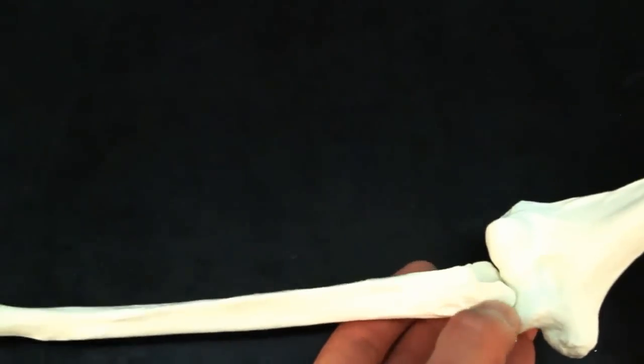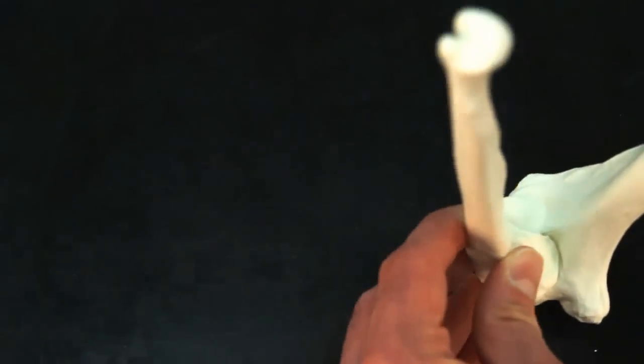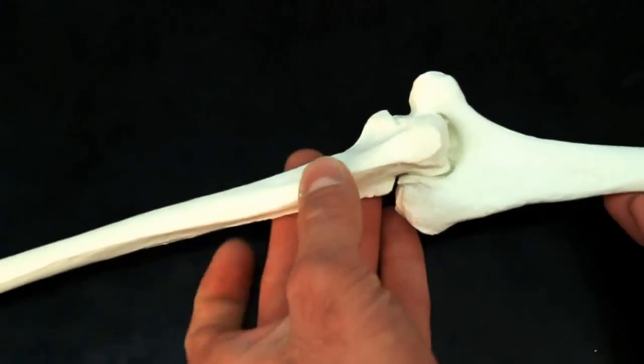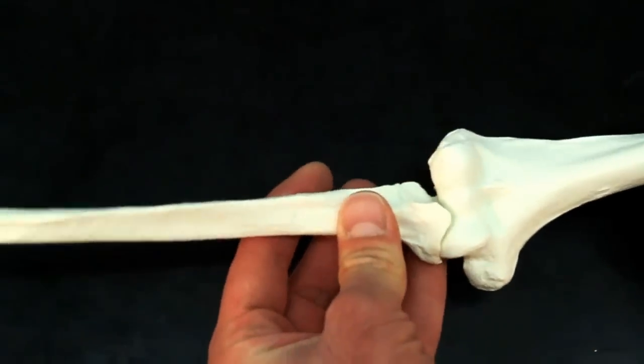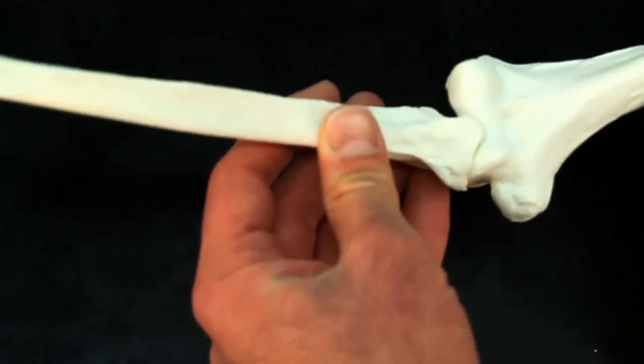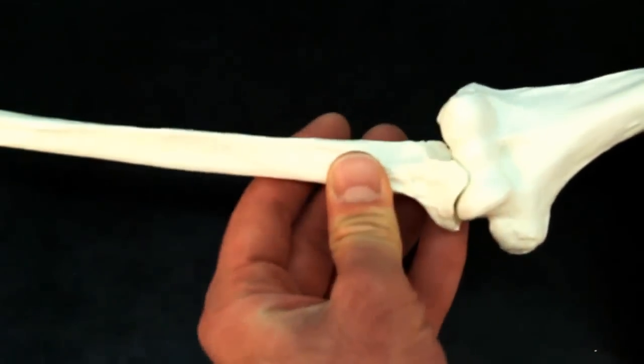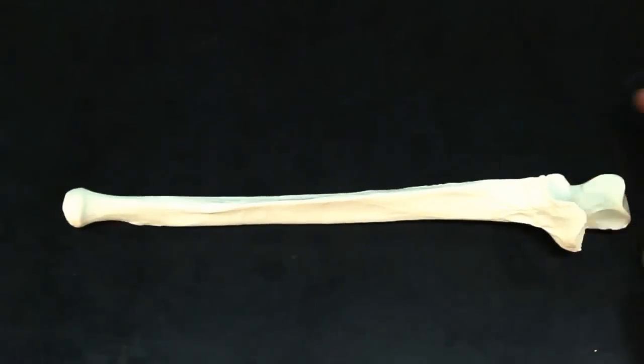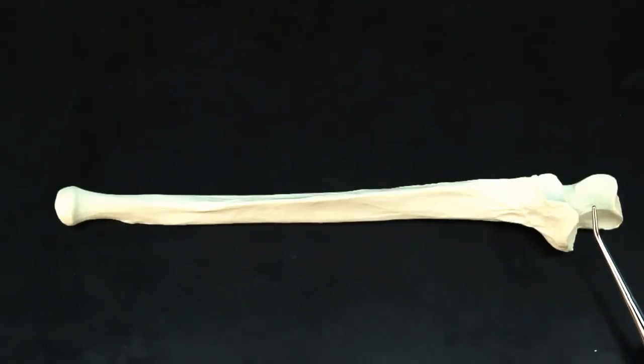The coronoid process goes in the coronoid fossa. The olecranon process goes in the olecranon fossa. The trochlear notch has the trochlea articulating with it. So that means that this bone must have the trochlear notch facing anterior.